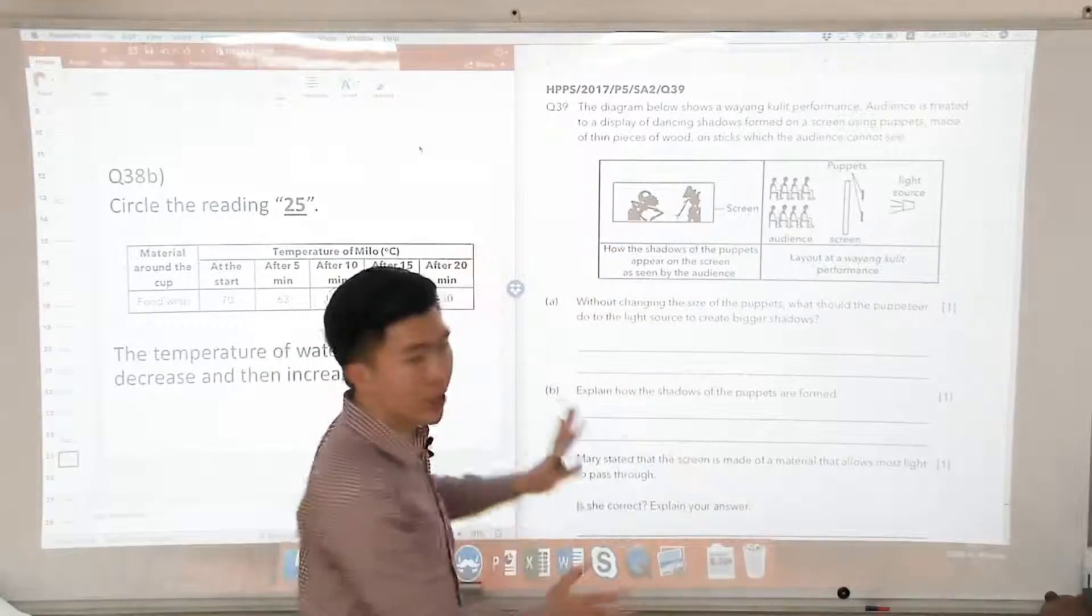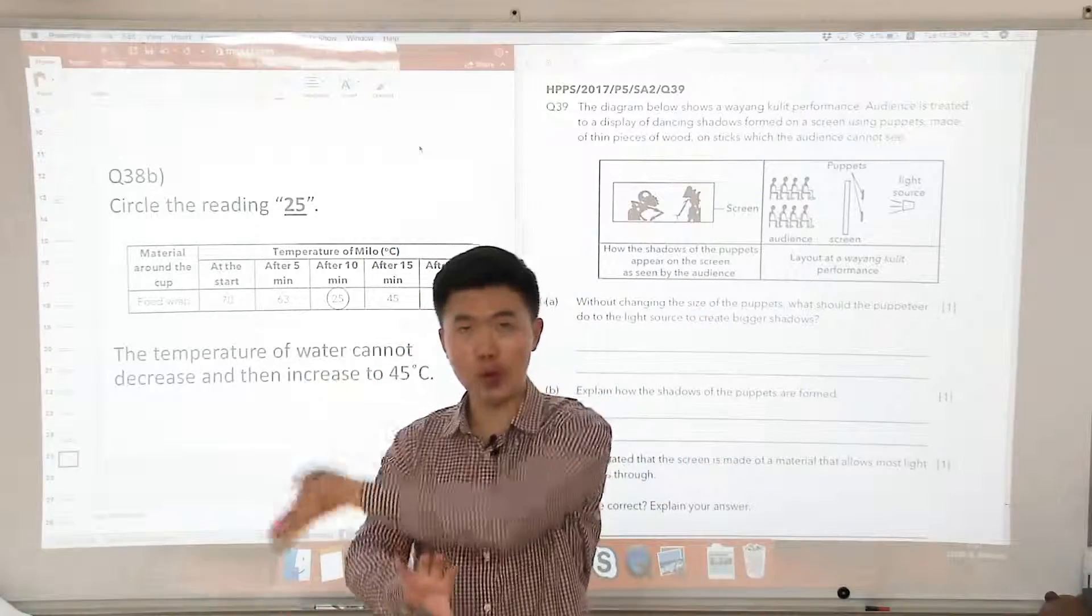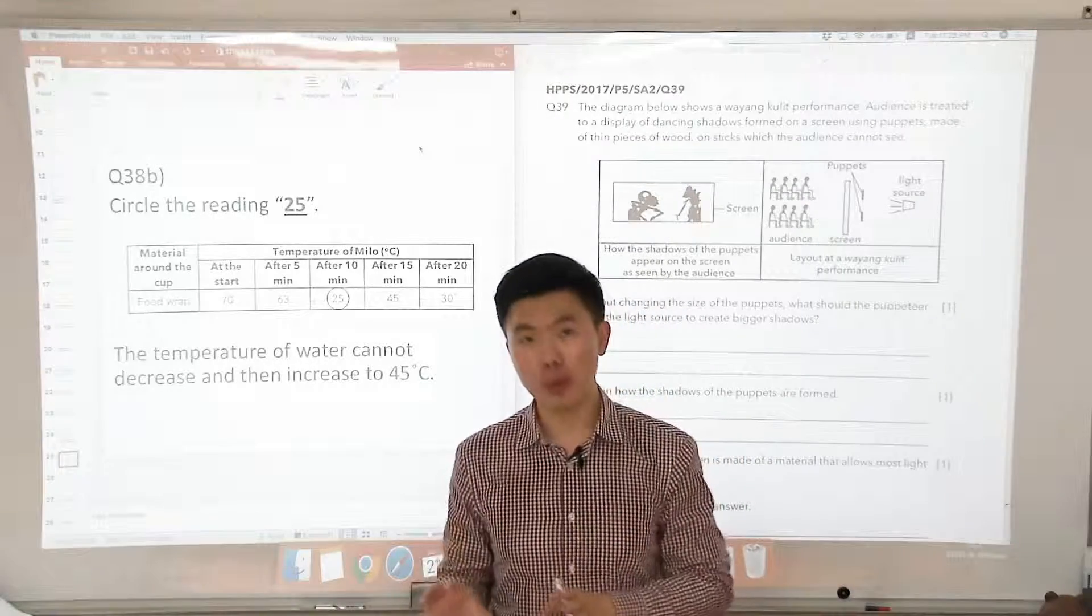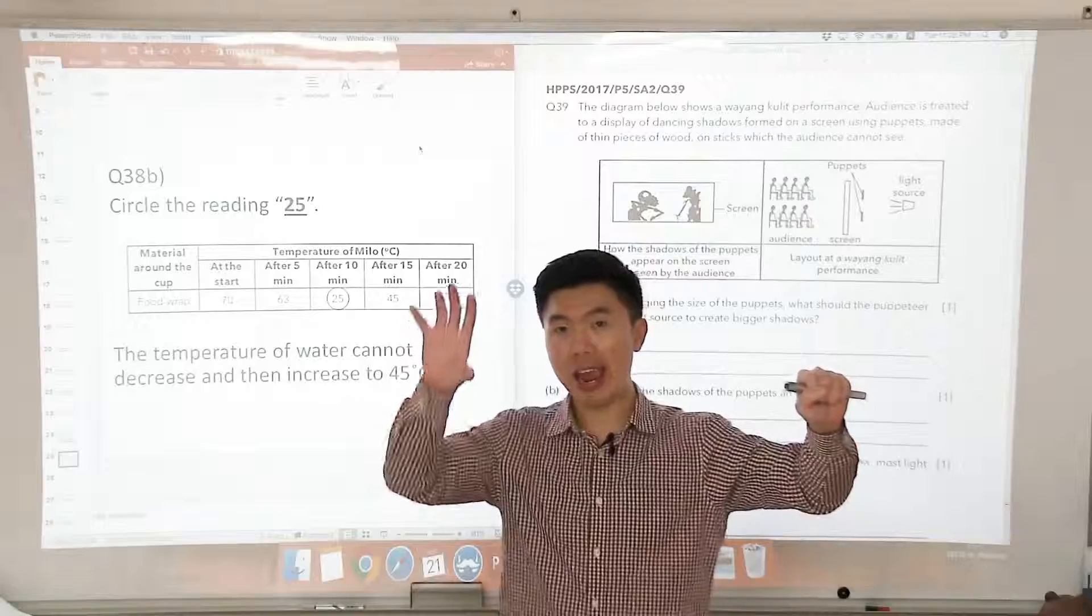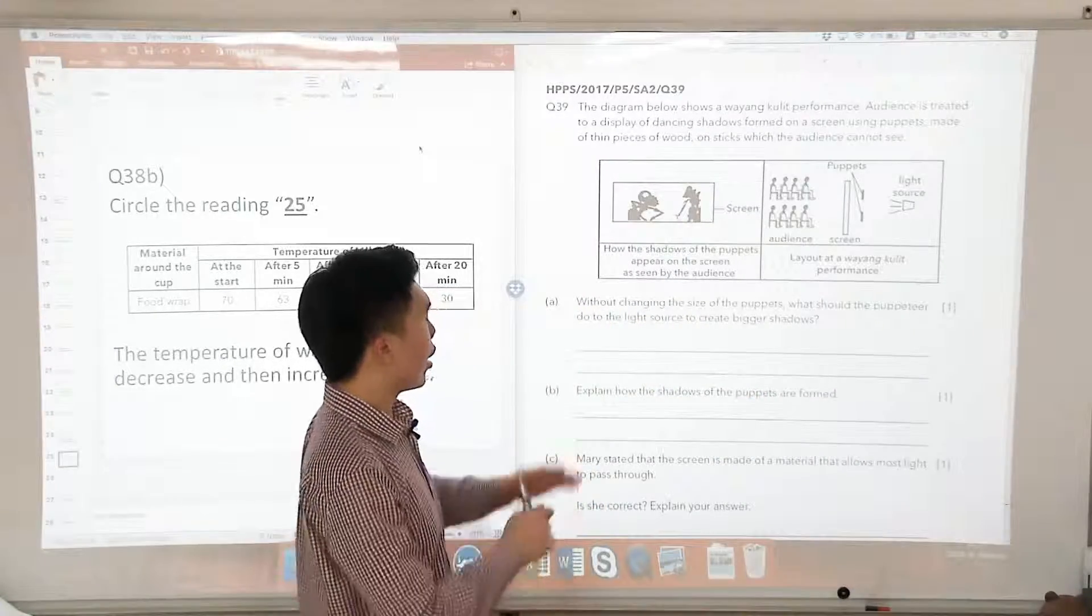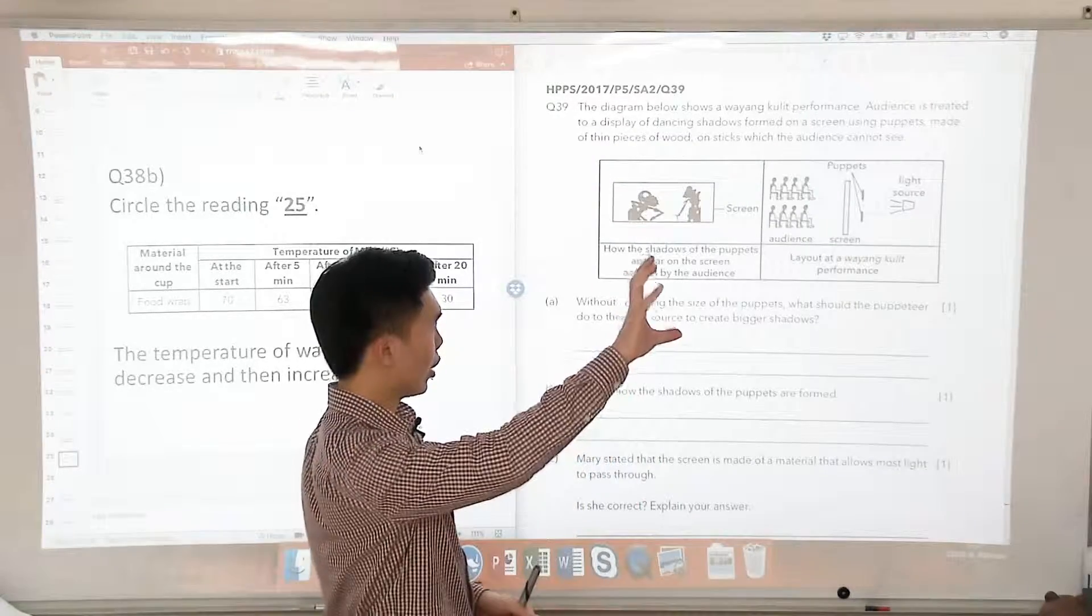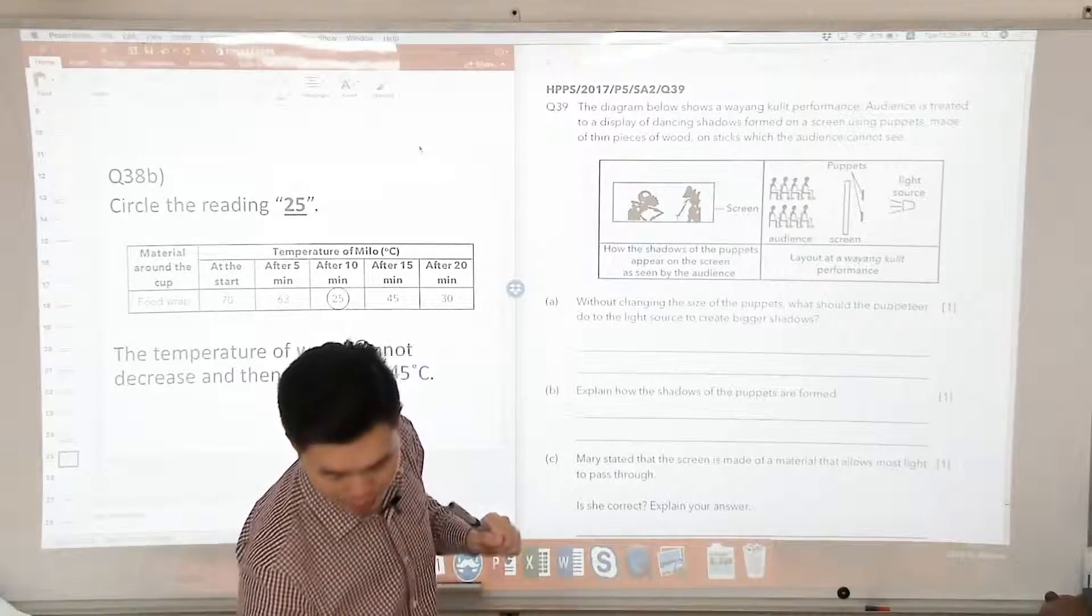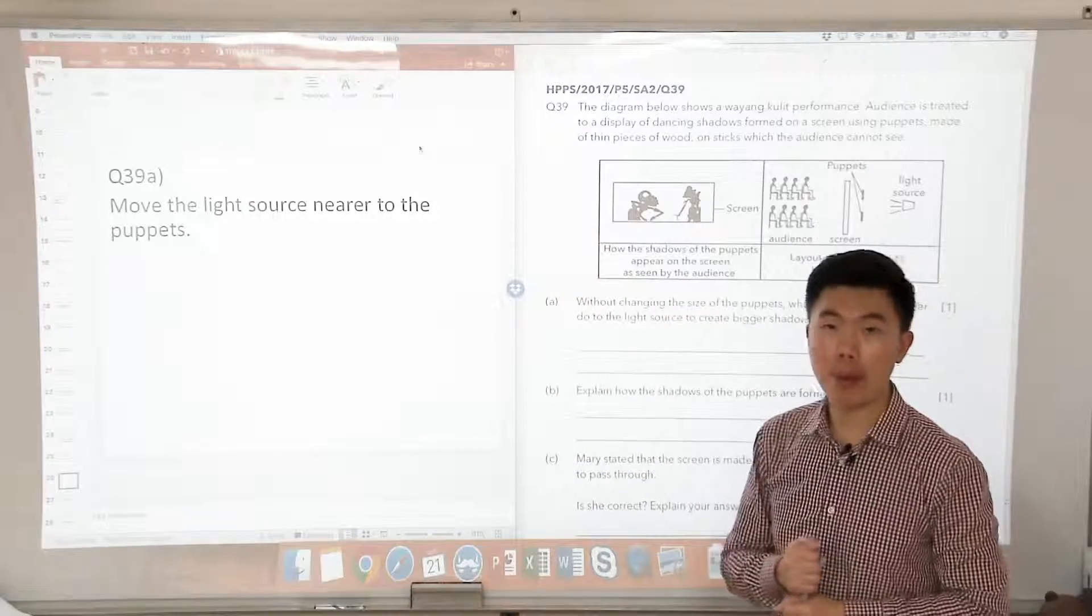If you just ignore all of this, you have an object, you have a light source, you have a screen. How do you create a larger shadow of the object? You decrease the distance between the light source and the object. So what we are going to do for this one is, if you want to make the size of the puppet's shadow larger, we will bring the puppets closer to the light source. So that is the answer for part A: move the light source nearer to the puppets.